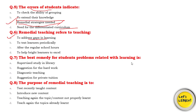Question number 7: What is the best remedy for students' problems related with learning? Options include: supervised study in library, suggestion for hard work, diagnostic teaching, or suggestion for private tuition. Diagnostic teaching is the best way to remedy. First of all, if you have a problem, you diagnose first and see what the problem is. The best way is diagnostic teaching, and after that you give remedy.